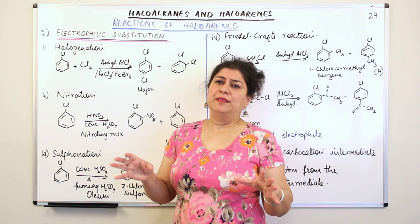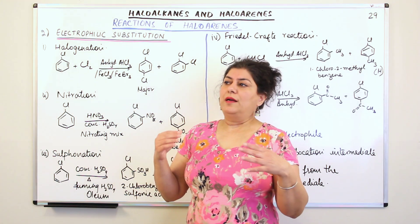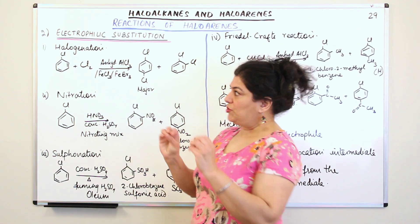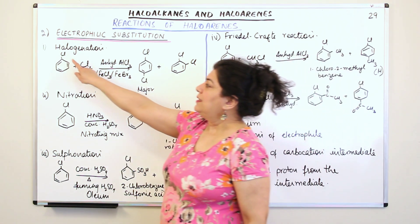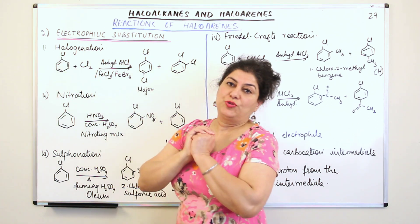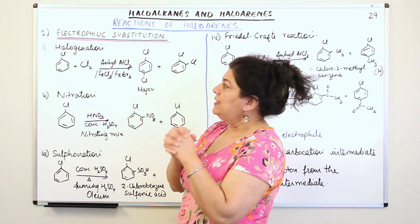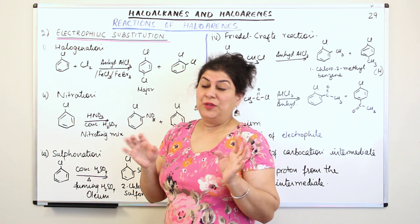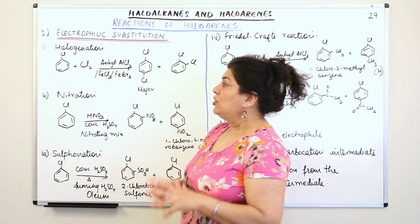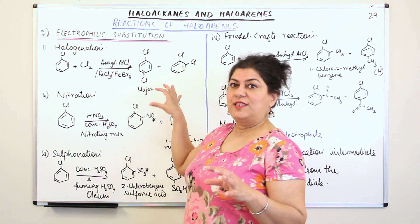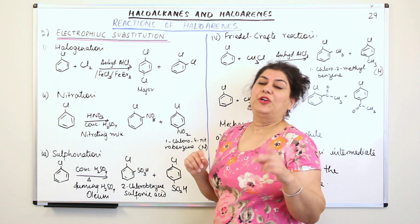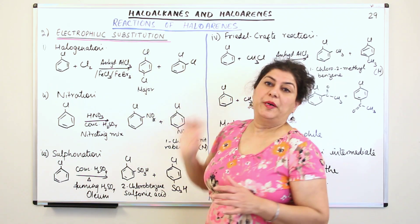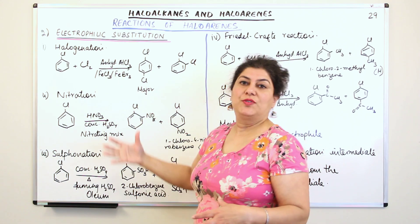These reactions are very similar — the same reaction is taking place — but the difference is that here a halogen is already attached to the benzene ring. We have studied that the halogen is a deactivating group and it is ortho-para directing. This has an effect on the products. The products you get would not be one product but two: one would be an ortho-isomer and the other would be a para-isomer. Otherwise, the reactions are the same.